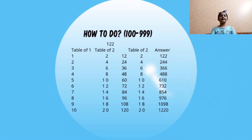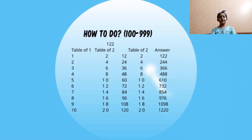1 plus 0 is 1 and then this 2. 2 plus 0 is 2 and then this 4. 3 plus 0 is 3 and then this 6. 4 plus 0 is 4 and then this 8. 5 plus 1 is 6 and then this 0. 6 plus 1 is 7 and then this 2. 7 plus 1 is 8 and then this 4. 8 plus 1 is 9 and then this 6. 9 plus 1 is 10 and then this 8. 10 plus 2 is 12 and then this 0.